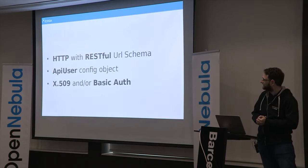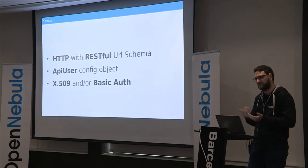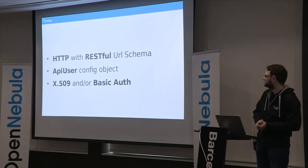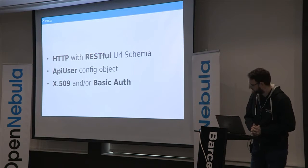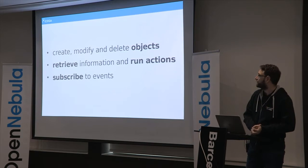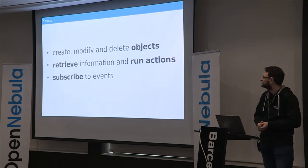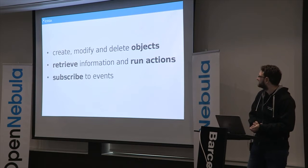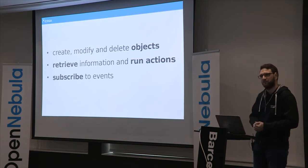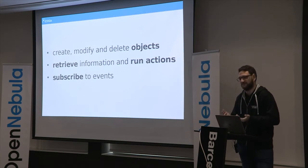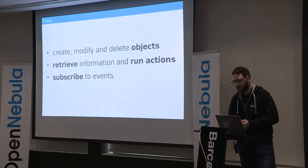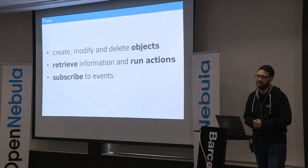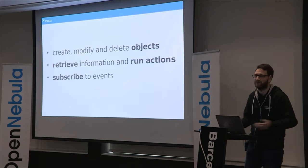The API itself is an HTTP API with a RESTful URL schema. Authentication is through basic authentication or X.509. What can I do with the API? I can create, modify, and delete configuration objects — I can modify all objects except constants, because they are constants. I can also retrieve information and run actions from my monitoring system, and I can subscribe to events. I can get all actions or whatever is going on in my monitoring system and use it for notifications, logging, or whatever I want.